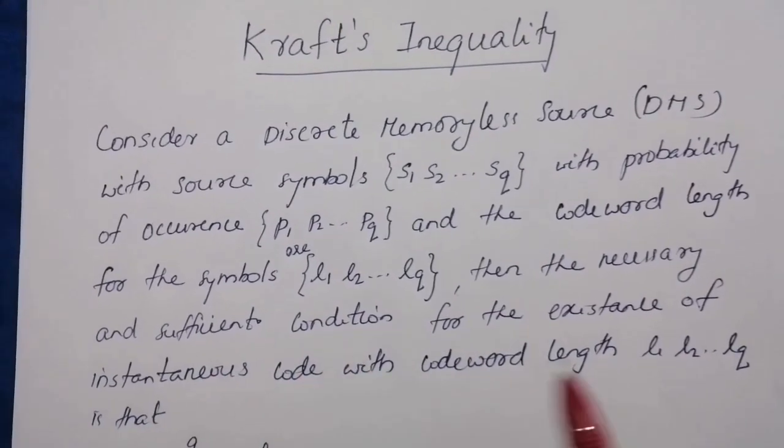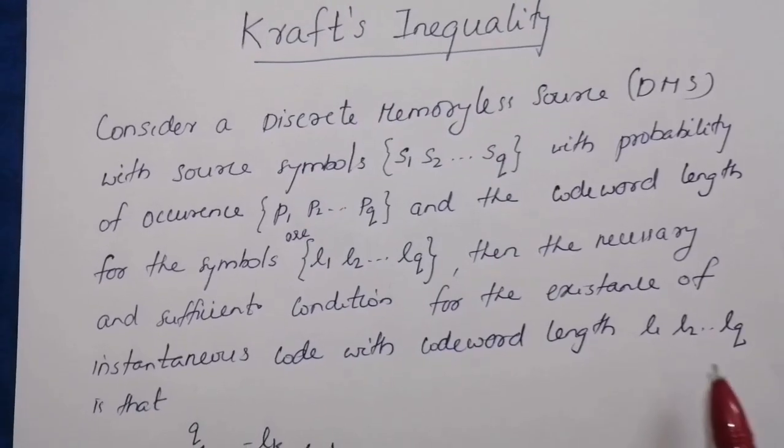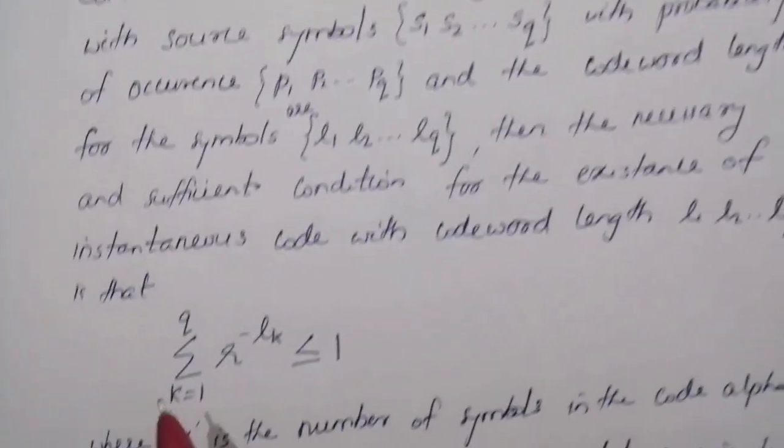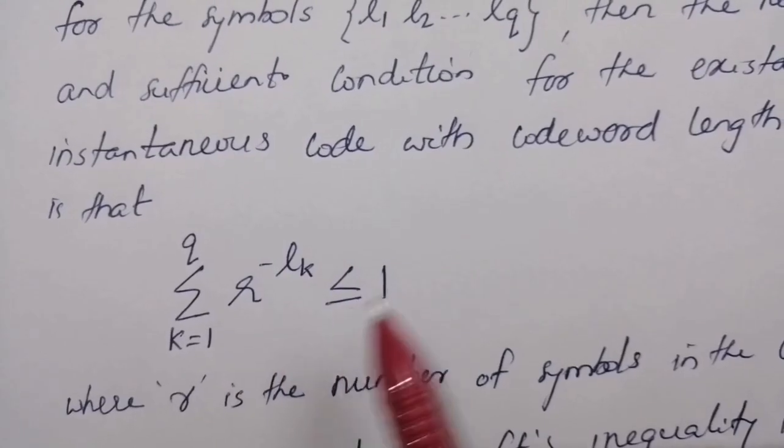The necessary and sufficient condition for the existence of instantaneous code with codeword length L1, L2, etc., LQ is that sigma K equals 1 to Q, R raised to minus LK, less than or equal to 1.